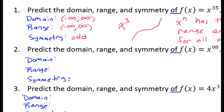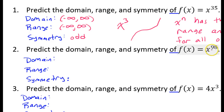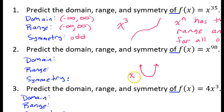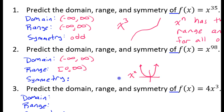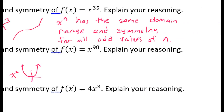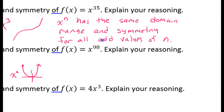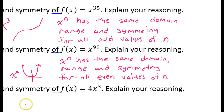What about the domain, range, and symmetry of x to the ninety-eighth power? Well, that is an even value of n, and we've seen that all x to the n functions share the same domain, range, and symmetry when n is even. So look at x squared — the domain is negative infinity to positive infinity, the range is 0 to infinity, and the symmetry is even — and that will be the answer for any even value of n.